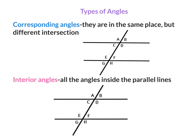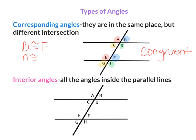Corresponding Angles. Angle B corresponds to angle F because both are in the top right-hand section. Angle A corresponds to angle E because both are in the top left-hand section. Angle D corresponds to angle H because both are in the bottom right-hand section. Angle C corresponds to angle G because both are in the bottom left-hand section. Therefore, angle B is congruent to angle F, angle A is congruent to angle E, angle D is congruent to angle H, and angle C is congruent to angle G.